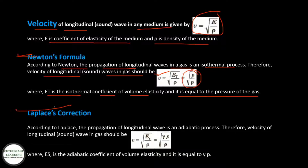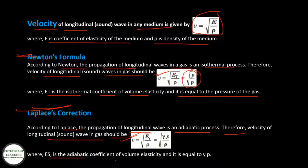Laplace correction: According to Laplace, the propagation of longitudinal waves in a gas is an adiabatic process. Therefore, velocity of longitudinal waves in a gas is V = √(E_S/ρ) = √(γP/ρ), where E_S is the adiabatic coefficient of volume elasticity and it equals γP.